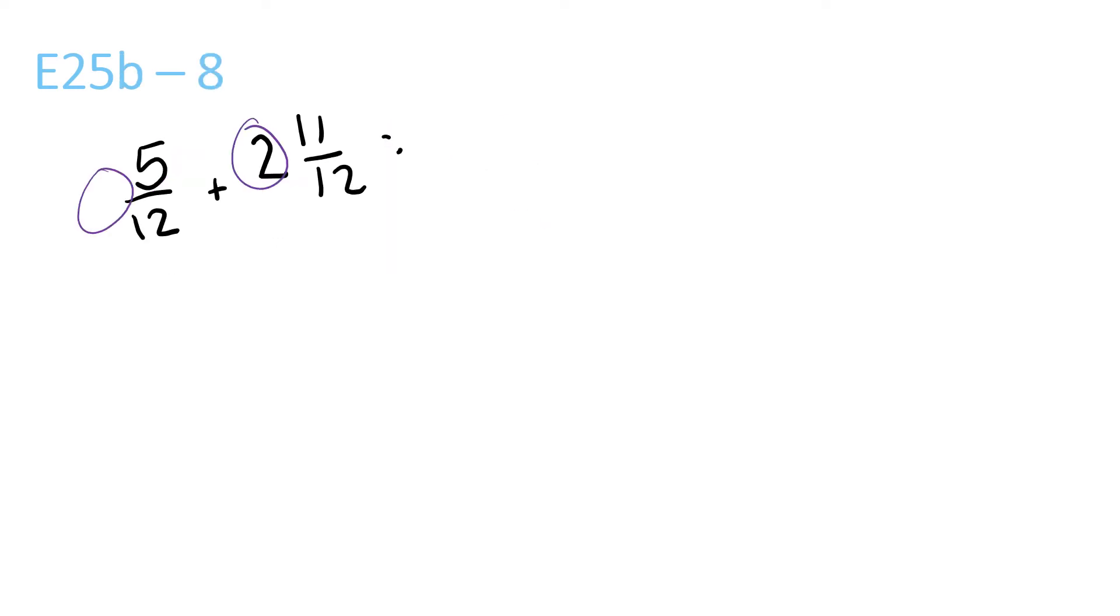2 plus nothing is equal to 2. 5 plus 11 equals 16 over 12. 12 goes into 16 once with a remainder of 4 over 12. 1 and 4 twelfths plus 2 equals 3 and 4 twelfths.